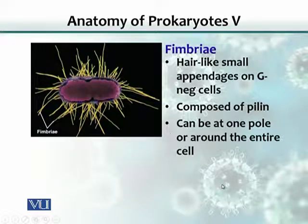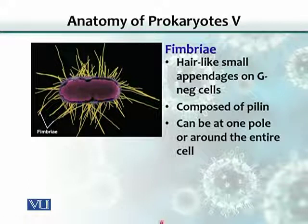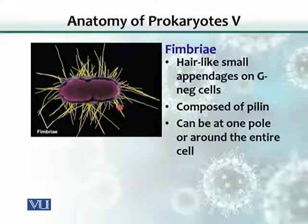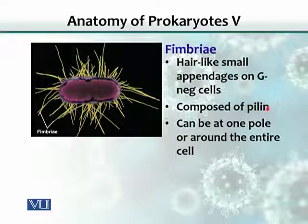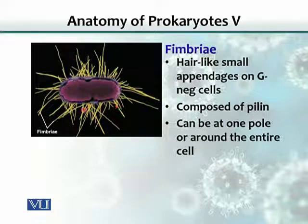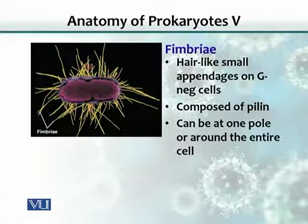Another component of the bacterium is the fimbriae. These are structures present outside the cell wall — hair-like projections composed of a protein called pilin. In flagella, the protein was flagellin; here, it is pilin. Fimbriae can be located at one pole of the bacterium, at both poles, or distributed all around covering the entire cell.